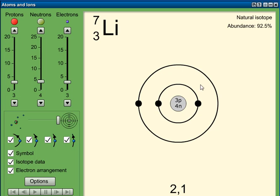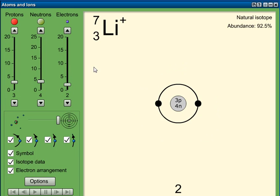We write the electron structure as 2,1 - that means two electrons in the first shell and one in the second.